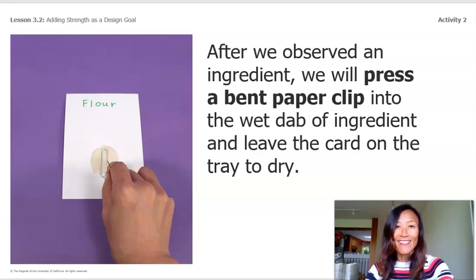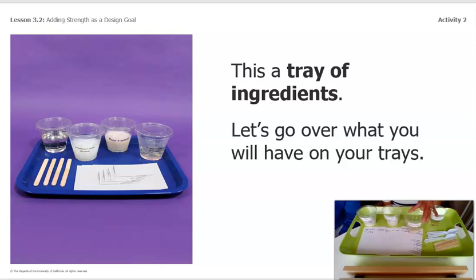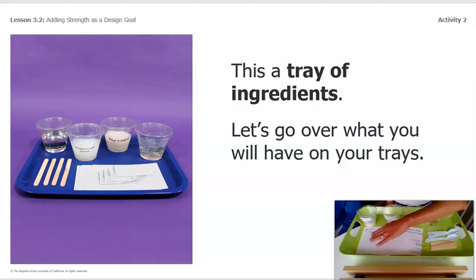This is a tray of ingredients. First we have flour and water mixed together. Next we have cornstarch and water that's been heated. Third we have gelatin and water that's also been heated and cooled. And then we have corn syrup. We also have spoons or stir sticks and our four test cards.